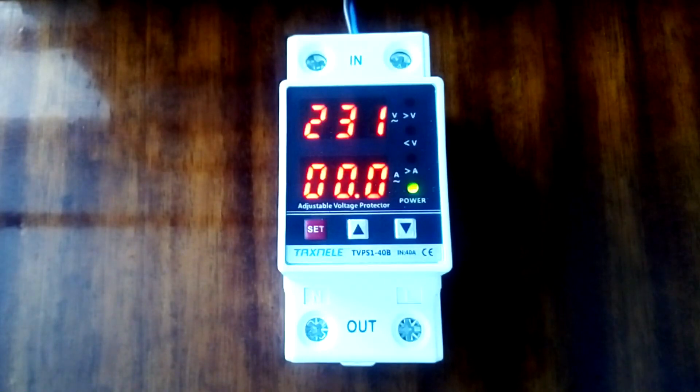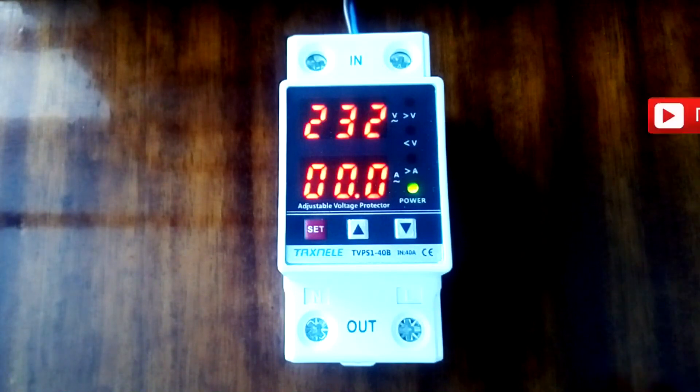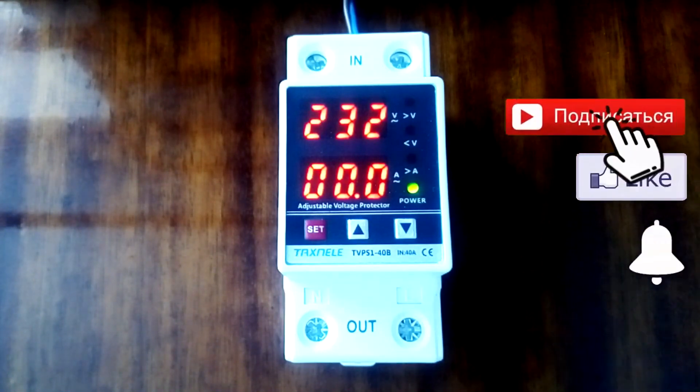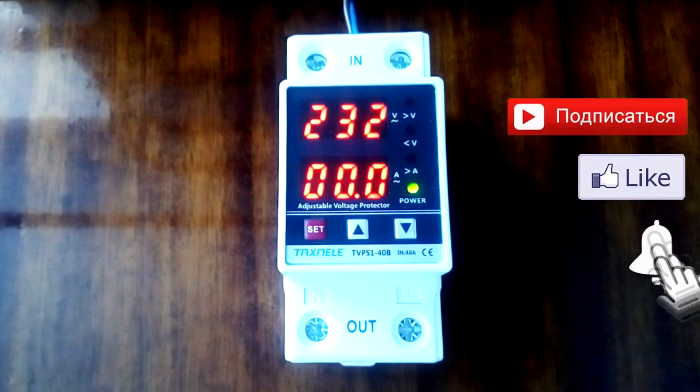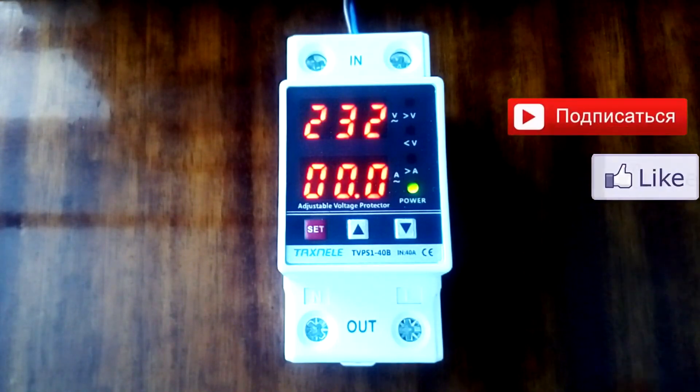The relay is already set to default relay trip values. For example, the upper threshold is 270 volts and the lower threshold is 170 volts. I do not agree with these values, as well as with the standard relay response time. I will record and post another video on the channel where I will show what relay settings I made for myself. I will post the link in the description. Subscribe to the channel and press the bell so you don't miss this video.